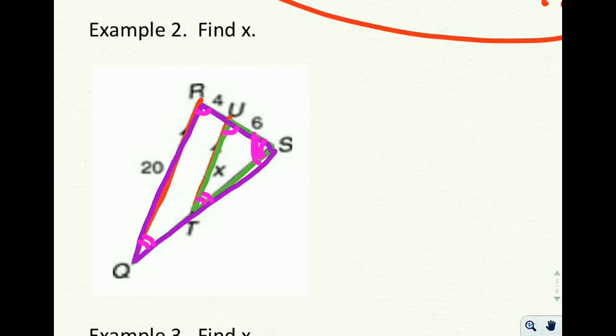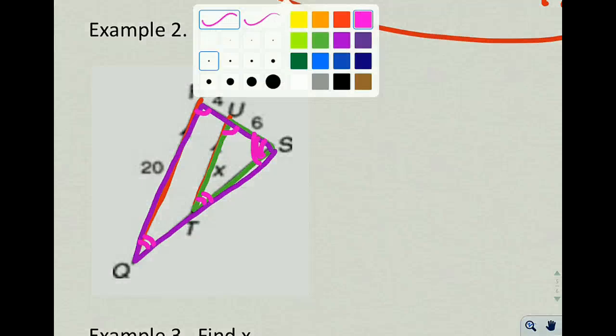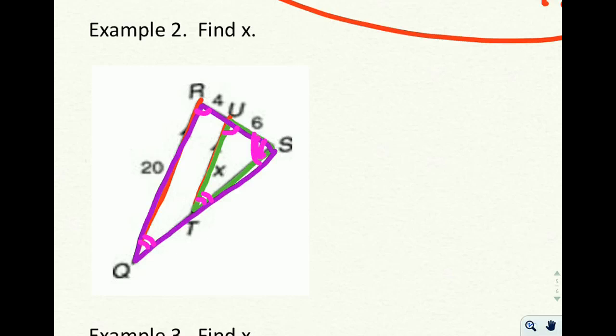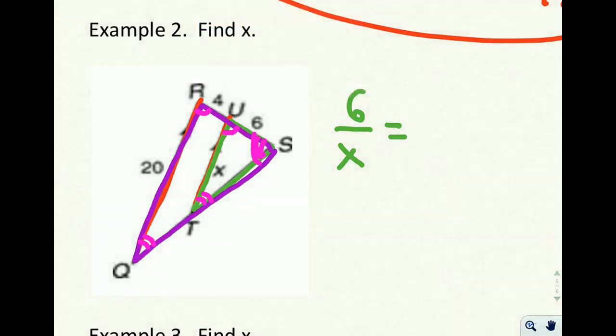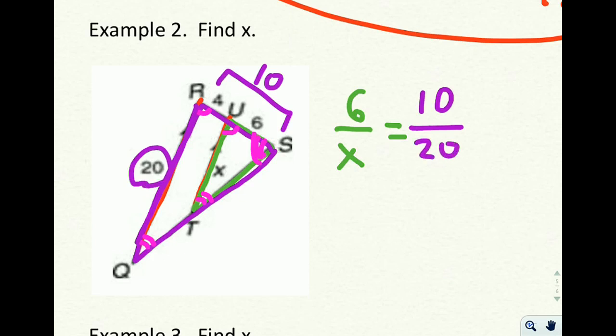So we can set up a relationship between the sides. And when we do that, let's start with the green triangle. We have a 6 here on top, and then an x coming down. So I'm going to write 6 over x, and that's going to be equal to something on the purple triangle. The length of this side, which is actually 6 plus 4, so 10, not 4, but 10, over the length of this side coming down, which is going to be 20. So 6 over x is equal to 10 over 20.